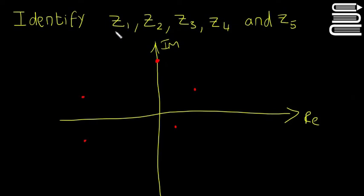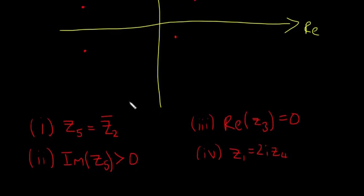So it asks you here to identify Z1, Z2, Z3, Z4 and Z5. So these are five different complex numbers, five different points, and you need to pick which one is which based on this information here.